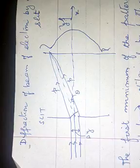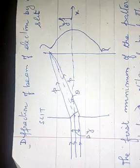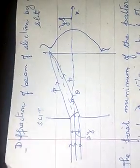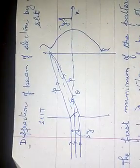The first minimum of the pattern is observed by putting n equals 1 in the equation describing the diffraction pattern due to a single slit, that is d sin theta equals n lambda.